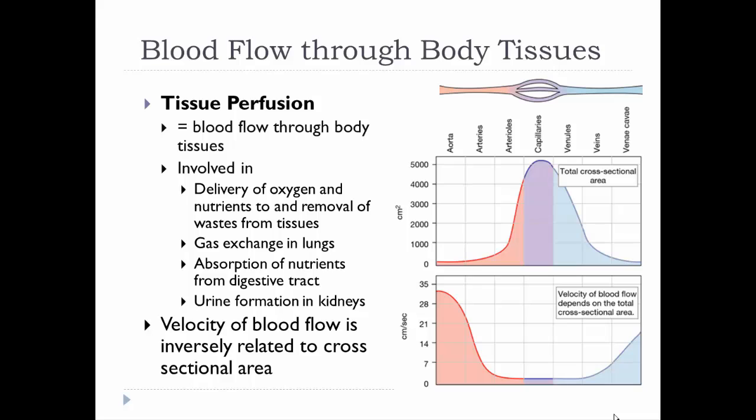Blood picks up speed after leaving the capillaries, which is good because arteries and veins are just there to get blood from the heart to the capillaries or from the capillaries back to the heart — they're not doing anything other than transporting blood. Right at the capillaries is where we need slow flow so there's lots of time for nutrient and waste exchange.